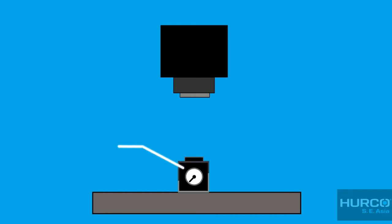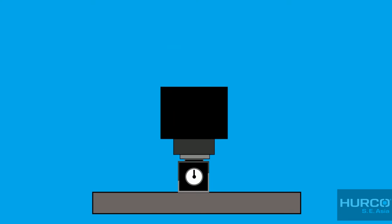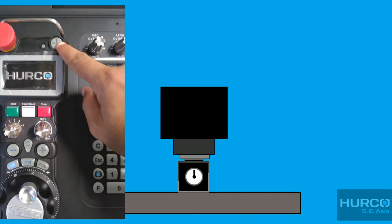You need a pre-known height gauge, for example, a 50 mm height gauge, to do the measurement. Put the 50 mm height gauge on the table surface. Move slowly the spindle down until the spindle nose touches the height gauge. Once the indicator shows 0, input the value by pressing the Store Position button in the WinMax Control.